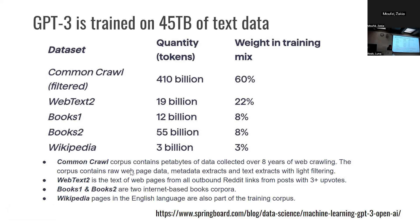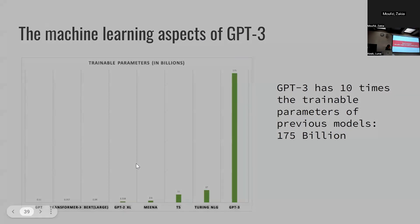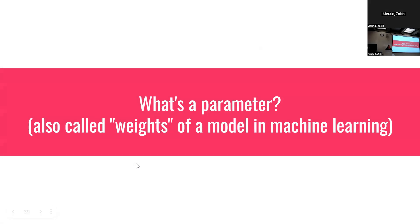GPT-3 is built from 45 terabytes of text data. Most of it comes from Common Crawl — a corpus containing eight years of web crawling, raw webpage data with light filtering. Also included: WebText2 (webpages from outbound Reddit links from posts with three-plus upvotes), books, and Wikipedia. Chat GPT is roughly version 3.5 — a little better. These parameters are also called 'weights' in machine learning.